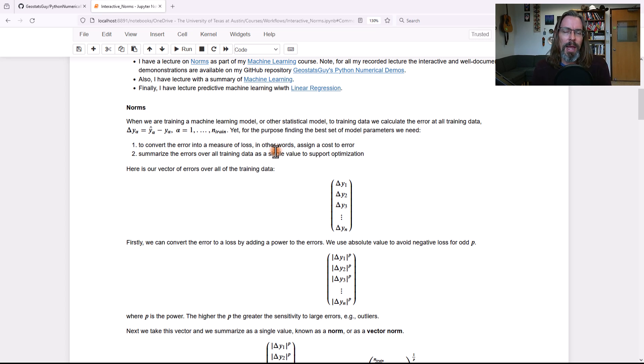The other thing is we can't take a bunch of losses over all of those data values and minimize that. We have to convert it to a single value. We need to summarize with one single value. And that value is our norm.